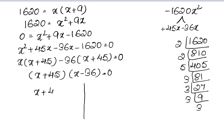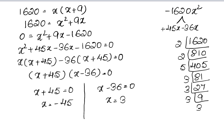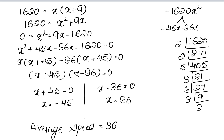Setting x minus 36 equal to 0, x equals 36. So our average speed is 36 km per hour — that is the answer.